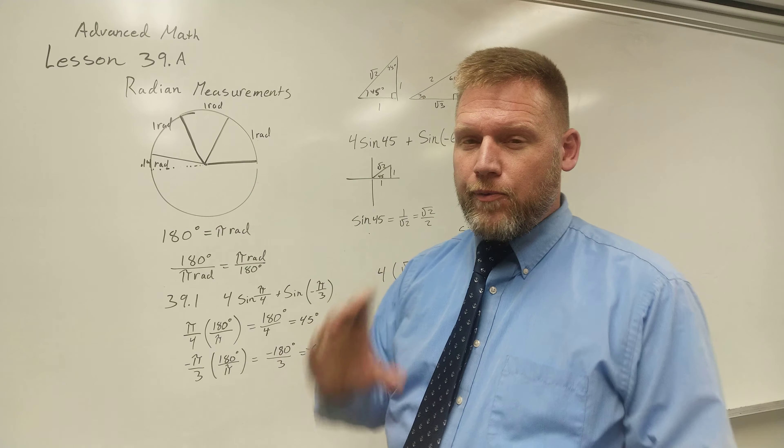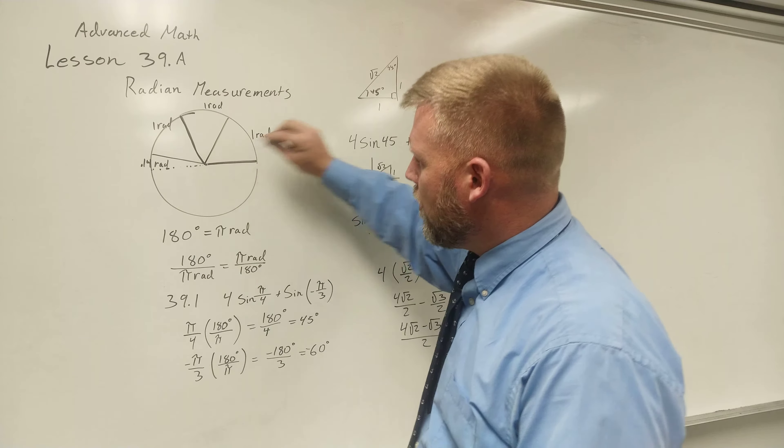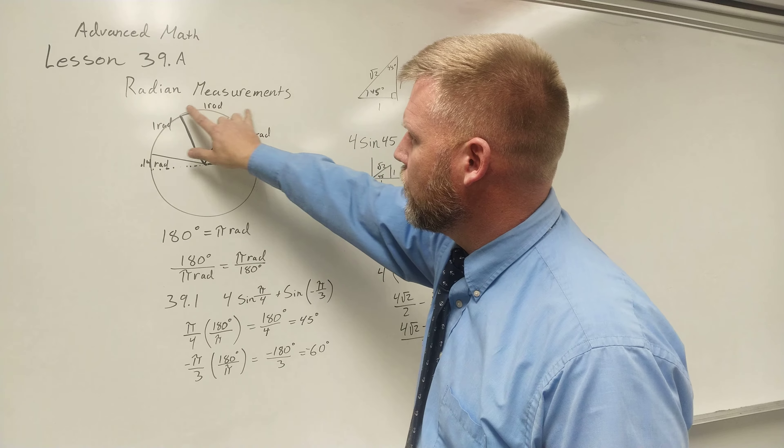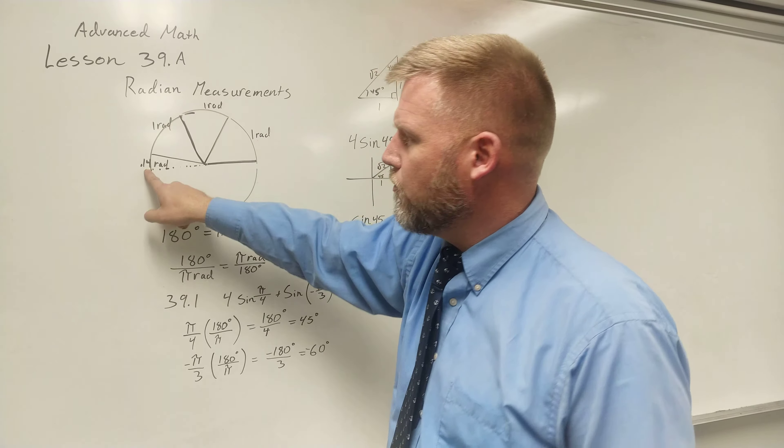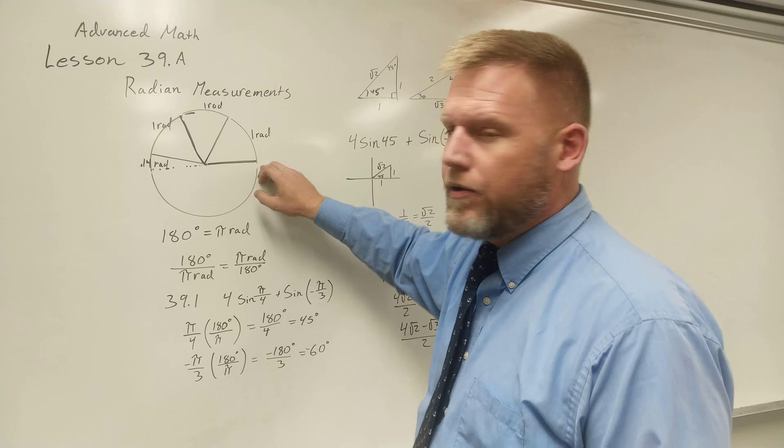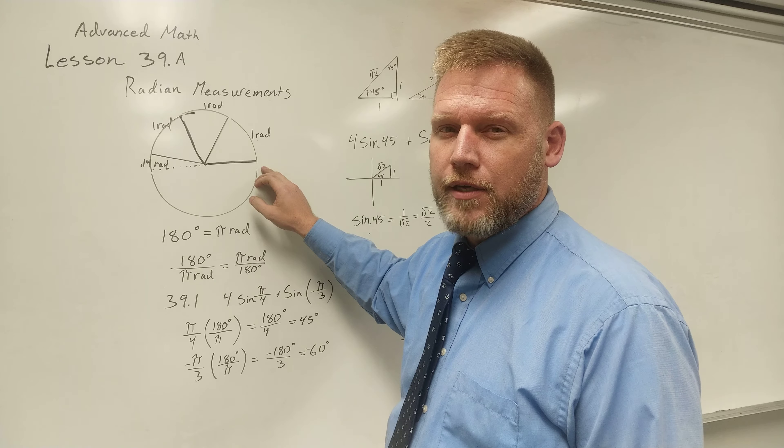If I took that radius and I peeled it off of here and laid it on the outside of my circle, I could get it around half the circle in 3.14 times, which means I could get it all the way around in 6.28 times.